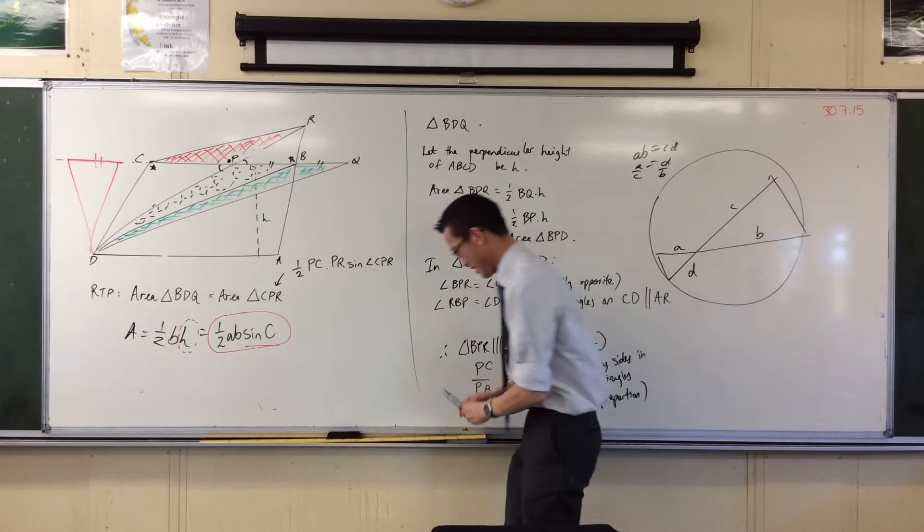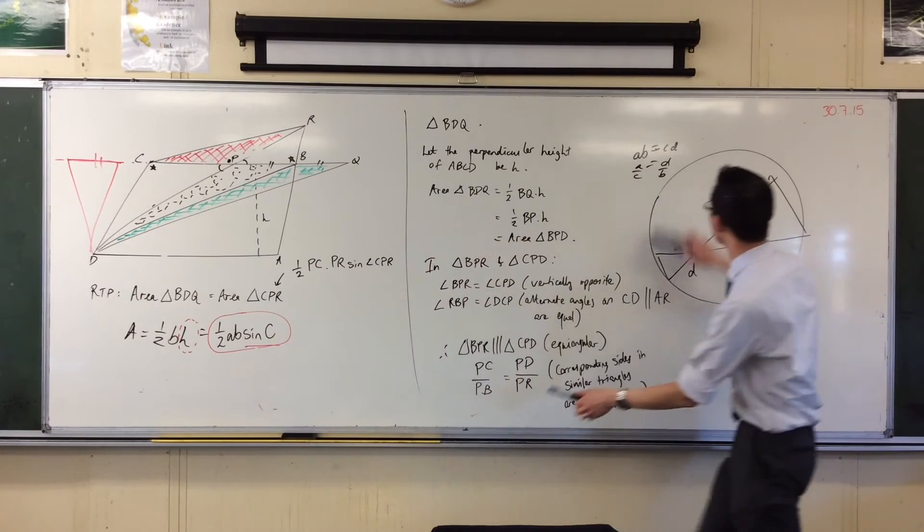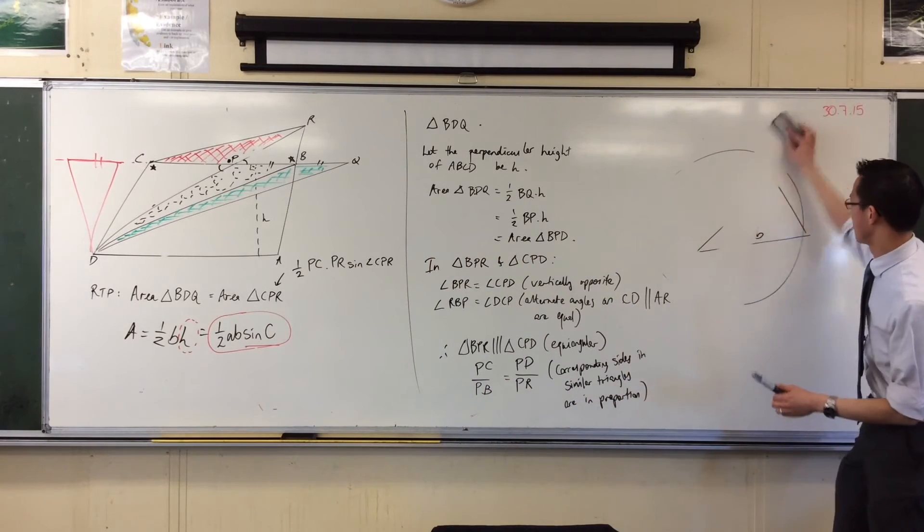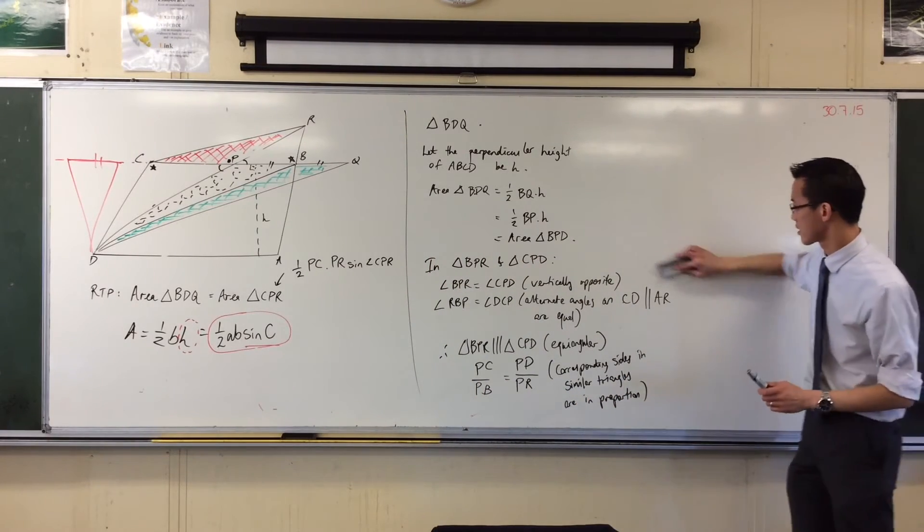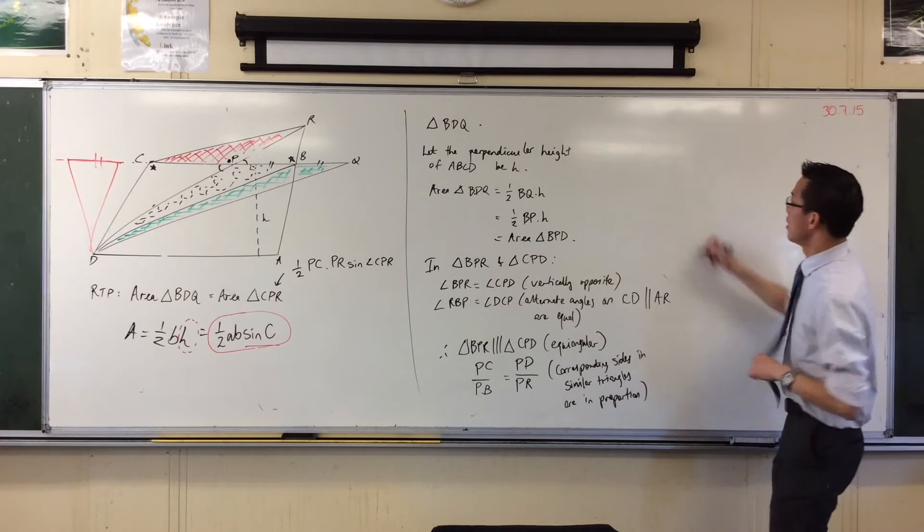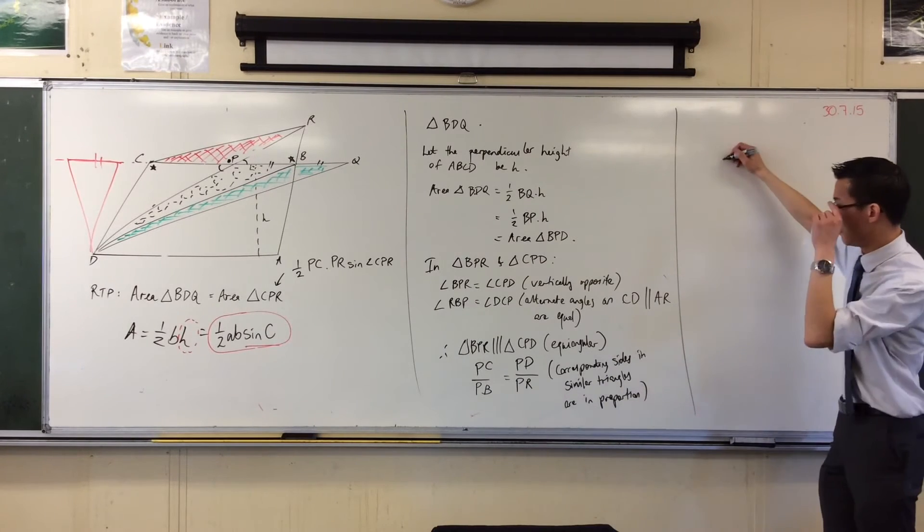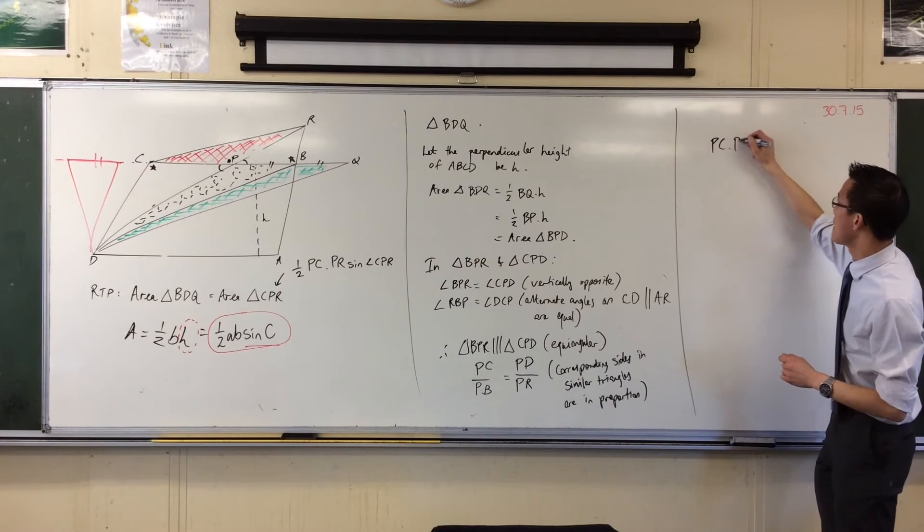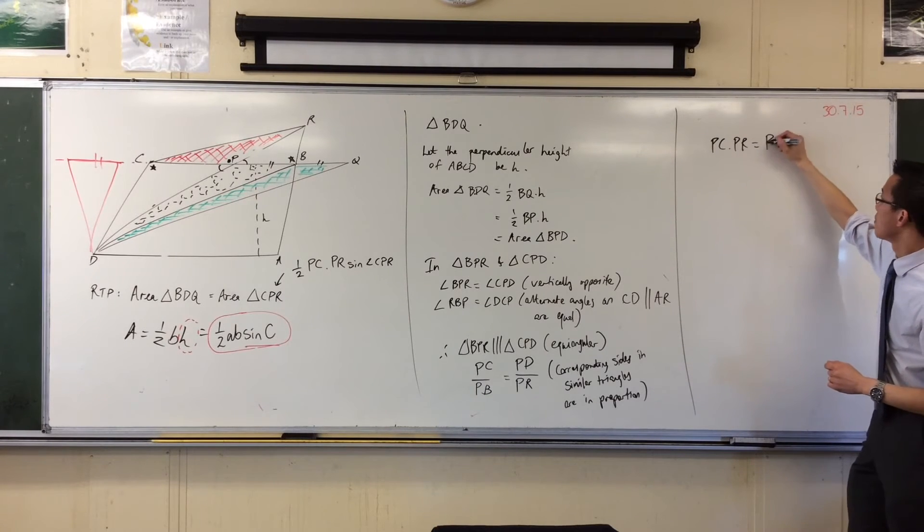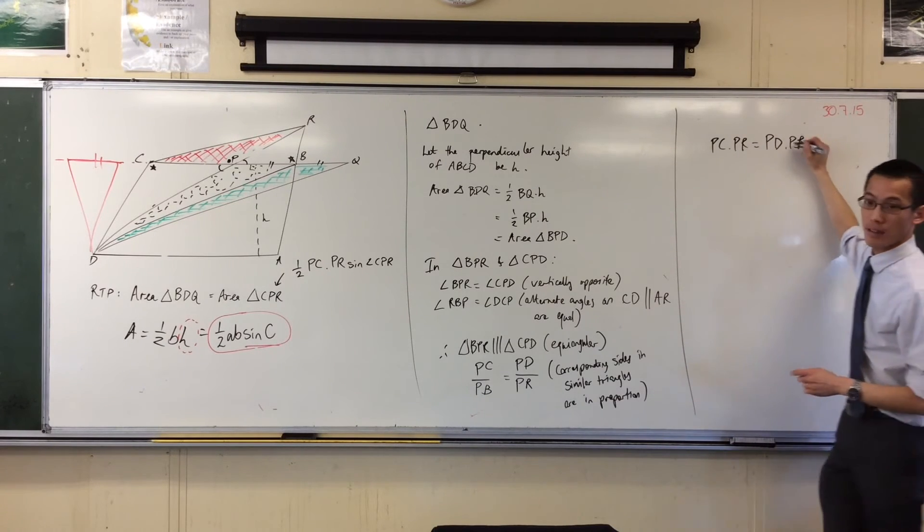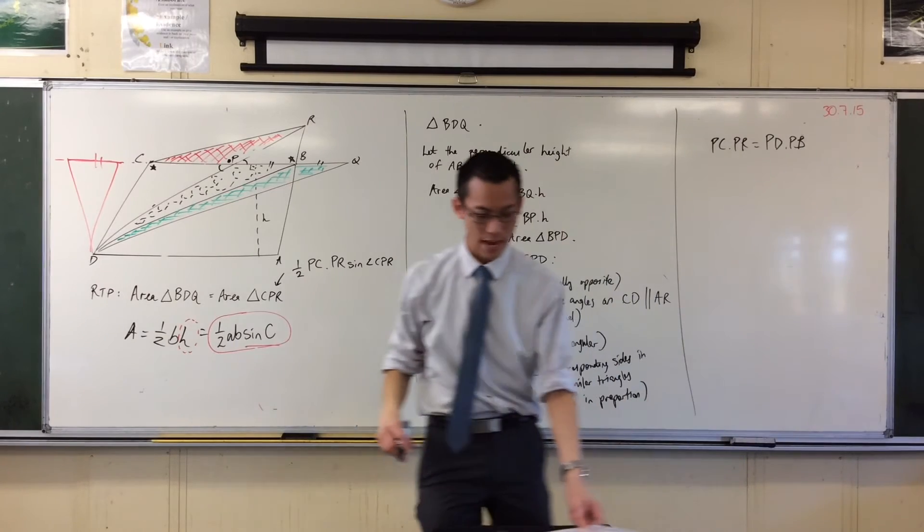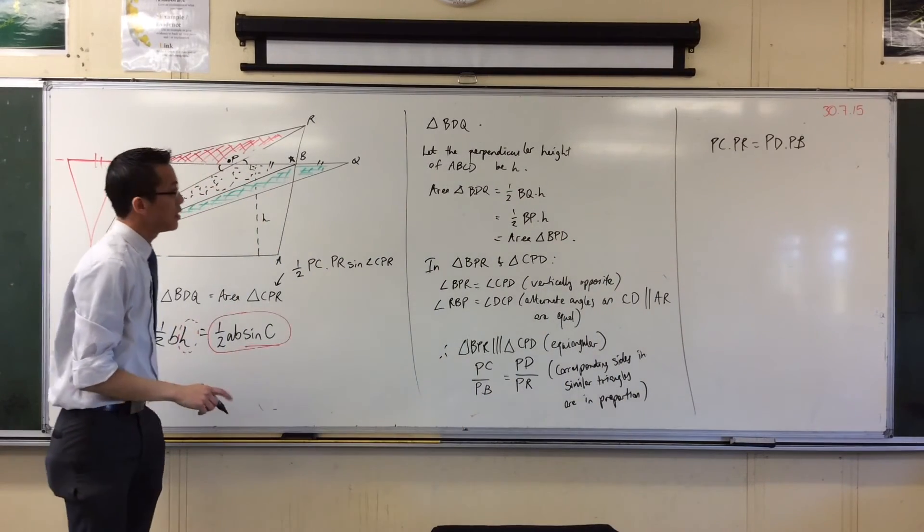Okay, now the rest of this pulls out so very nicely. Let's cross multiply. So we can say PC by PR equals PD by PB. I'm happy with that. Is that okay?